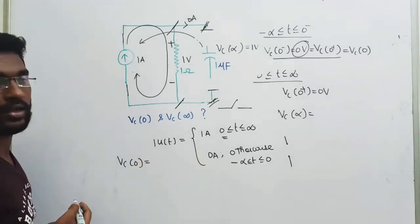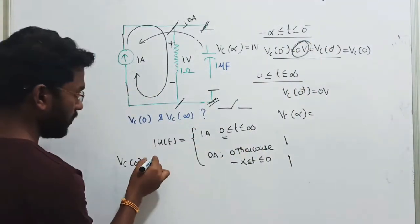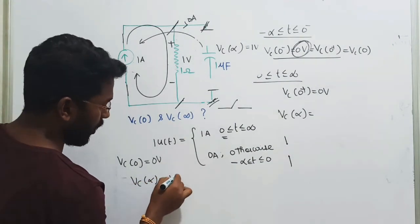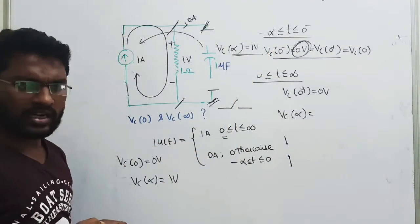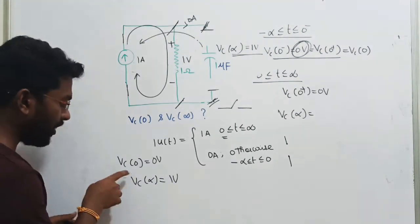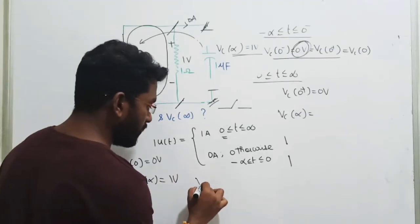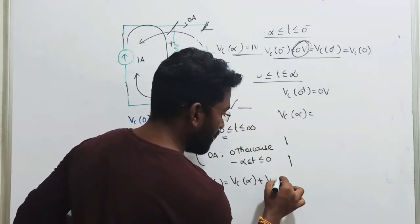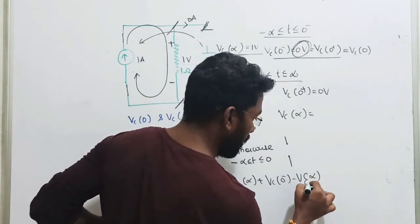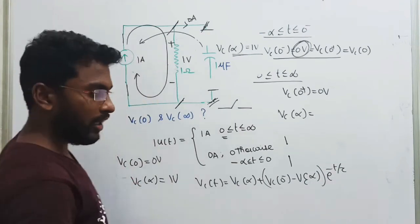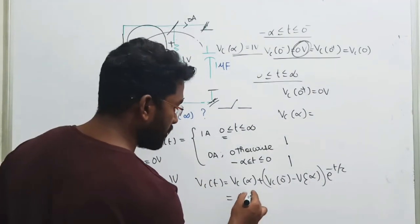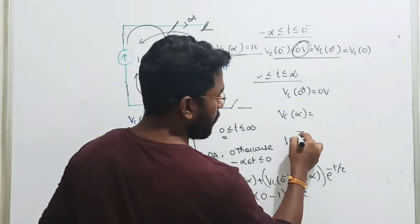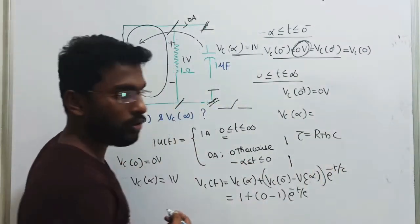So 1 into 1 becomes 1 volt. The potential difference between these 2 points is 1 volt, same as Vc(∞). So the final voltage is going to be 1 volt. What is the conclusion? Initial voltage drop across the capacitor is going to be 0 volts, and the final voltage drop across the capacitor is going to be 1 volt.